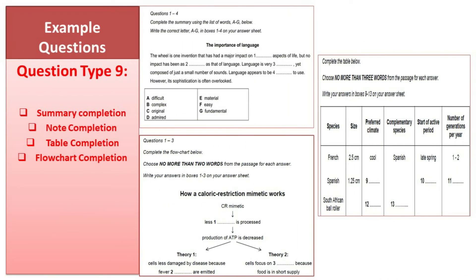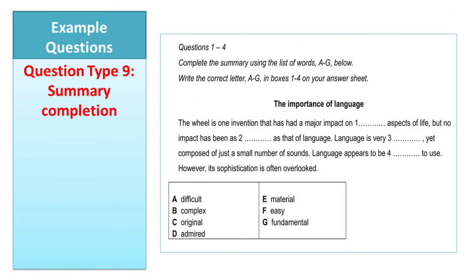Question type nine consists of different sub-types: summary completion, note completion, table completion, or flow chart completion. For summary completion, you are given a summary — like fill in the blanks — and you need to find the correct word to complete it. This can come with a list of options to choose from, or without a list where you find the words directly from the text and write them within the summary.